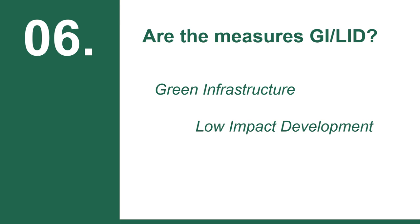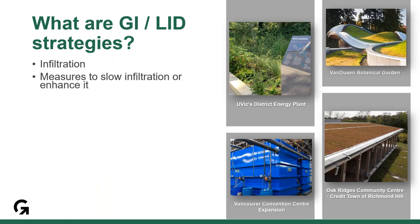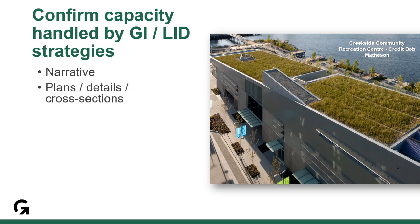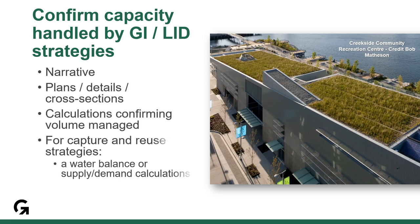The last check is determining how the chosen percentile is dealt with on site — specifically, whether the measures the project employs are considered green infrastructure or low impact development as required by the credit. We won't dig deep into those strategies today, as they are a topic for a much longer session, but many resources exist online to help you determine appropriate strategies. Reviewers look for various documentation to confirm the capacity volumes handled by the strategies. Narratives are always helpful; be sure to provide plans, details, and calculations, especially for water capture and reuse.